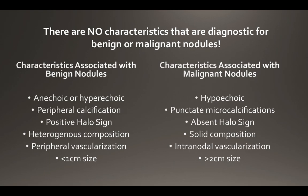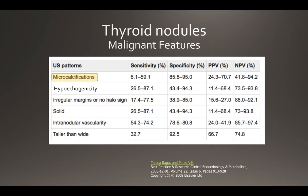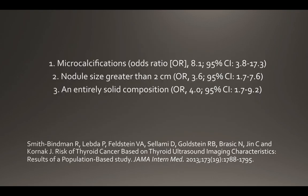Features associated with malignancy: if the lesion is hypoechoic, if it has punctate microcalcifications, an absent halo sign, a solid composition, intranodal vascularity, or greater than two centimeters in size. There are no characteristics that are diagnostic for benign or malignant nodules — this is a really important point. A study published in JAMA indicated that the presence of microcalcifications, nodule size greater than two centimeters, and a solid consistency were the top three indicators of potential malignancy, which correlates with the specificity data showing microcalcifications have the greatest specificity for malignancy.